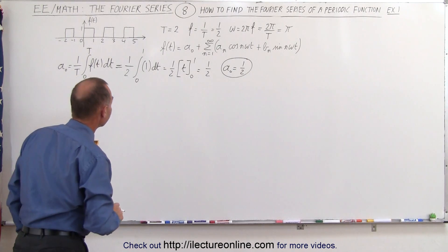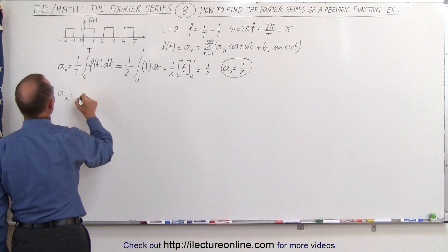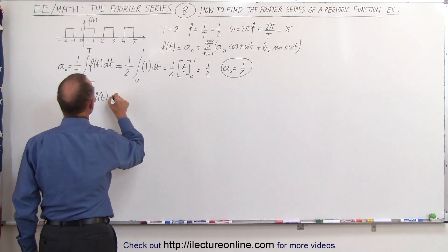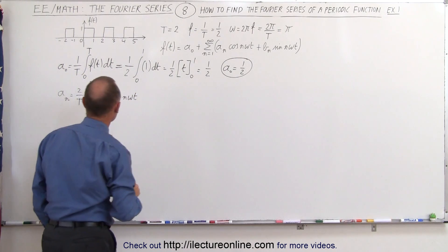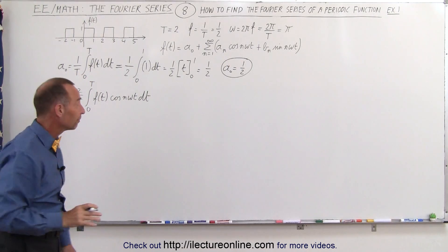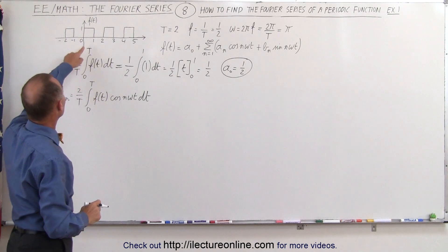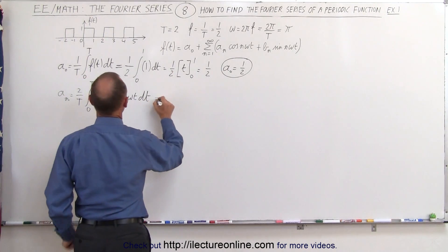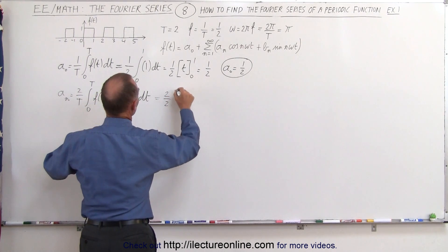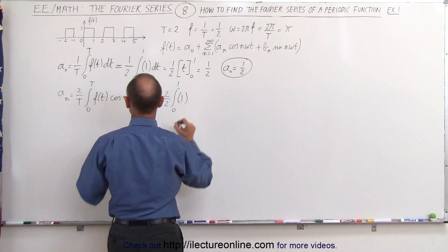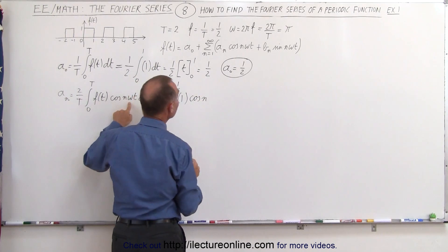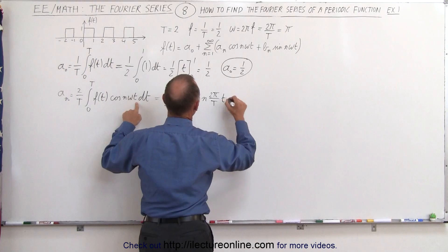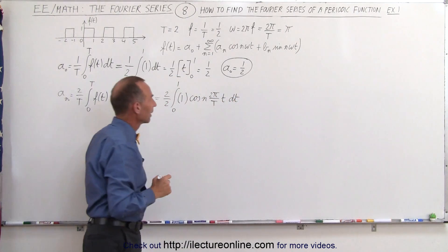Now we find a sub n. We write a sub n is equal to 2 over T times the integral from 0 to T of f(t) times the cosine of n·ω·t dt. We only need to integrate from 0 to 1 because from 1 to 2 the function is equal to 0. So this is equal to 2 over 2 times the integral from 0 to 1 of 1 times the cosine of n·ω·t, where ω can be written as 2π over T.